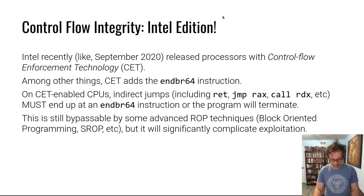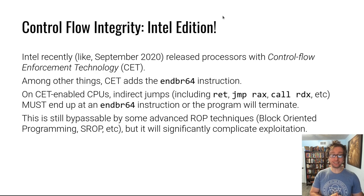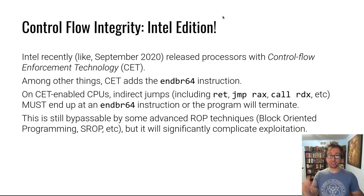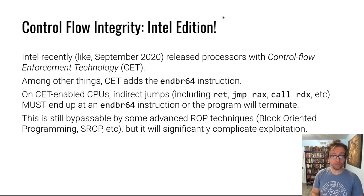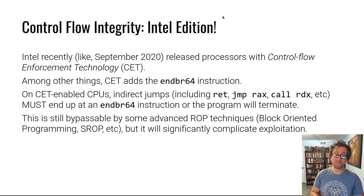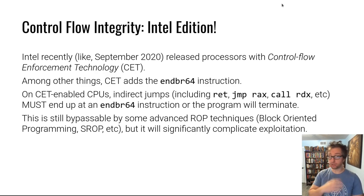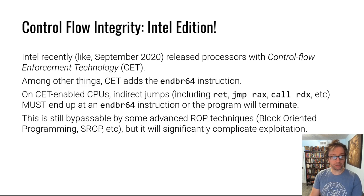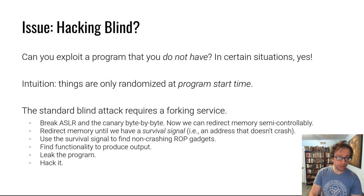What CET does is make ROP a lot harder. Once these processors become widely adopted, you'll no longer be able to chain these little gadgets together — you really have to chain whole functions or pieces of functions that are valid indirect control flow transfer targets. It's going to be tricky; it won't block ROP entirely since advanced techniques like block-oriented programming will still be viable, but it will complicate exploitation quite a lot. I'll probably have to completely redo this module within a couple years as these processors become commonplace.